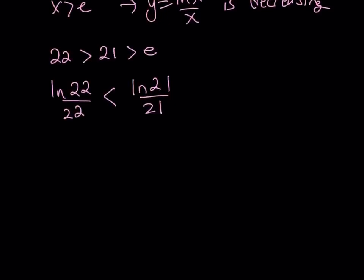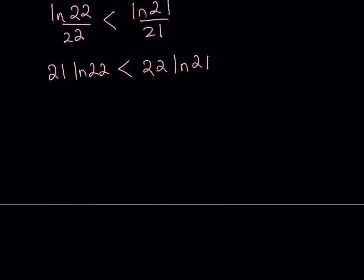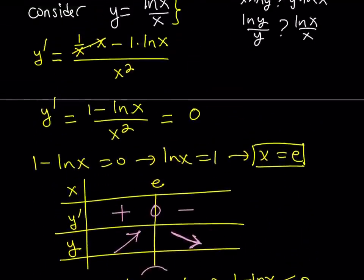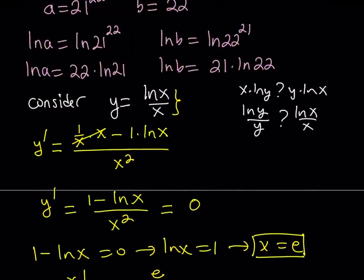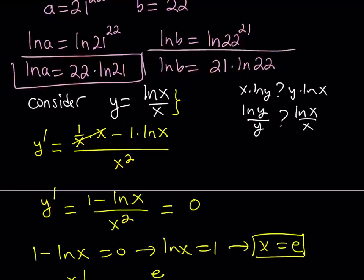Let's go ahead and make the cross multiplication. This gives us 21 ln 22 is less than 22 ln 21. And then from here, we're trying to find the largest number. So let's go ahead and switch sides and write this as 22 ln 21 is greater than 21 ln 22. Of course, they're multiplied. Now let's remember that 22 times ln 21 has a name. It is equal to ln A, and the other number is equal to ln B.